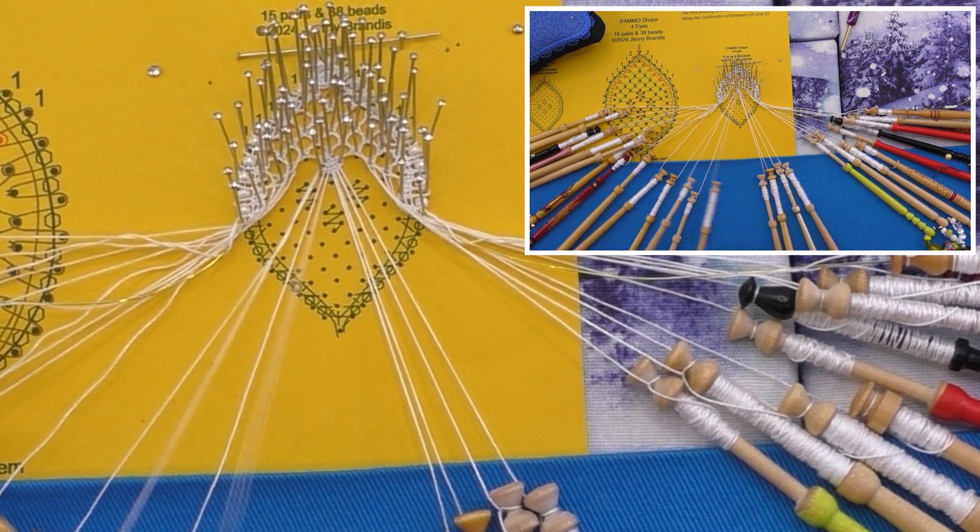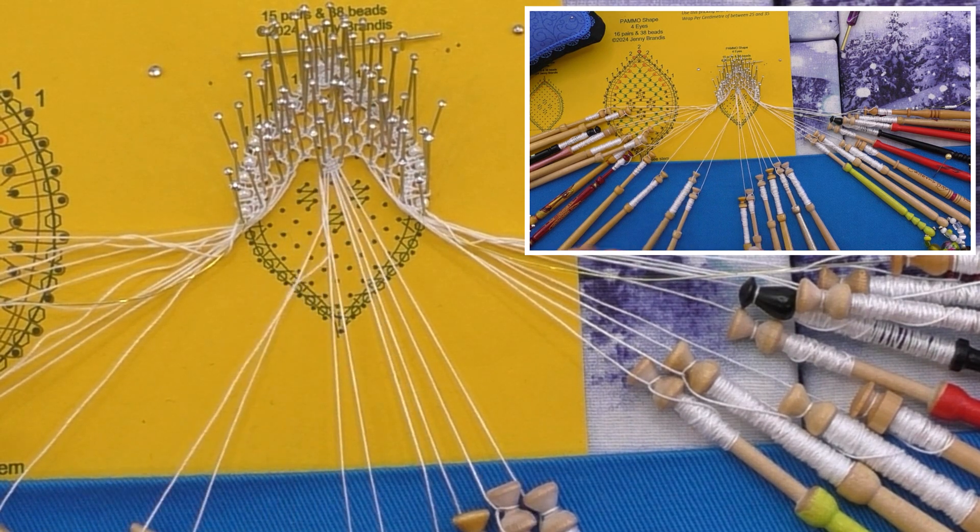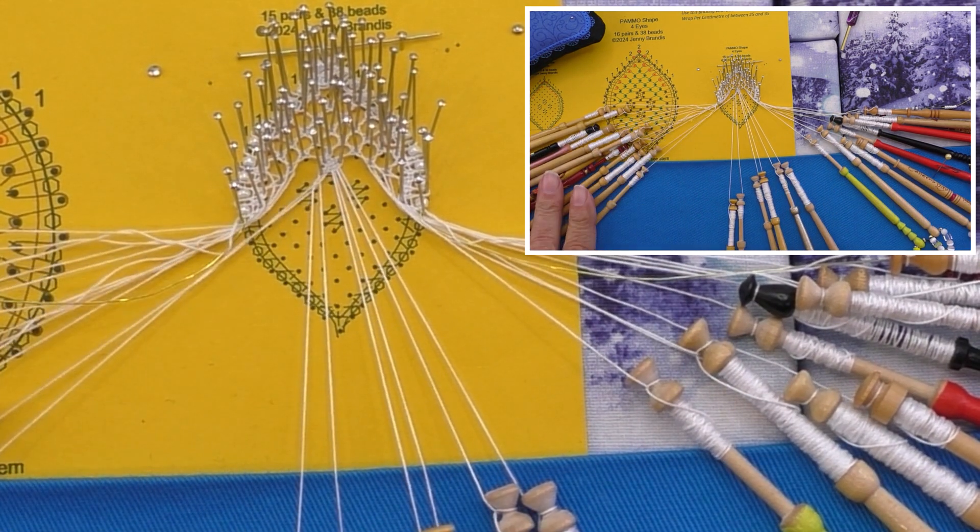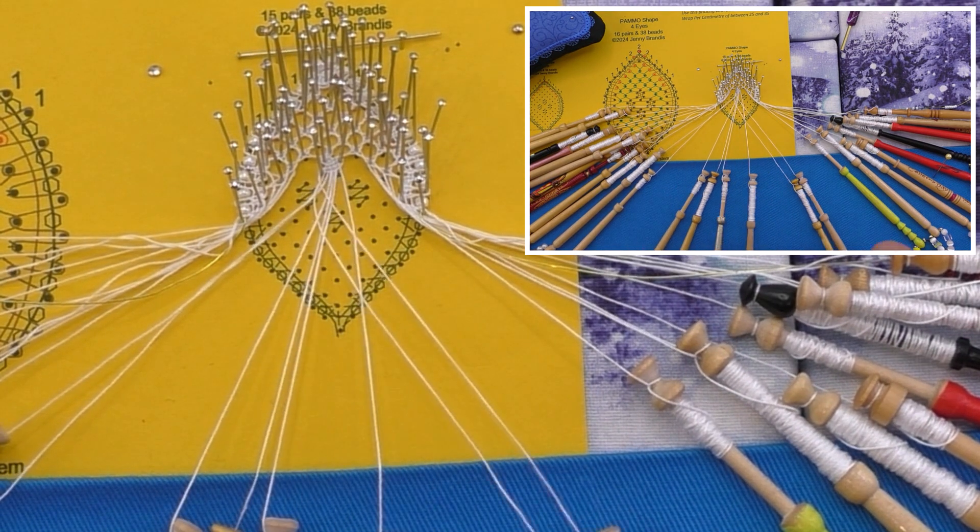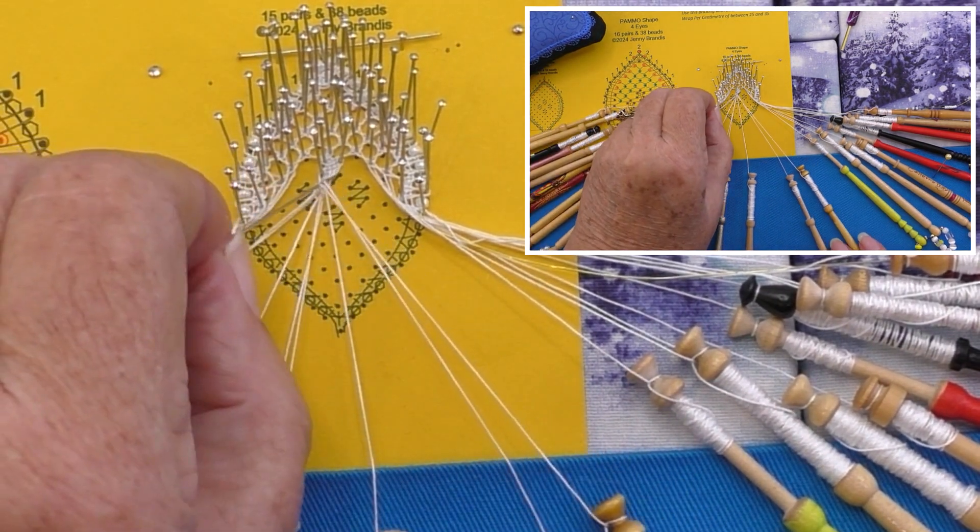Cloth stitch through the outgoing pair, add three twists to it and lay that pair aside. Cloth stitch to the right, add a twist to the weaver pair, put up the pin and tension.